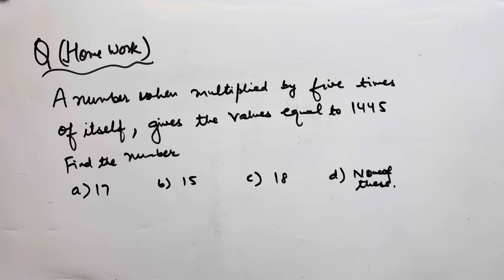This is the homework question: a number when multiplied by 5 times itself gives 1445. Find the number. Write your answer in the comment section. We will meet in the next video. Thanks.